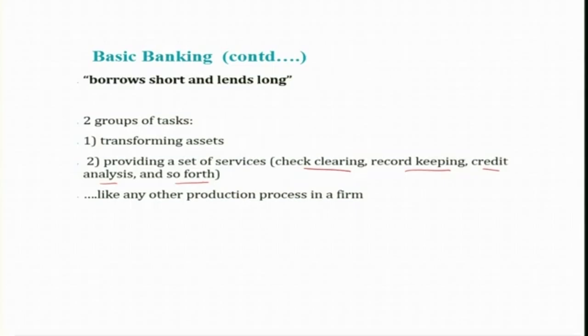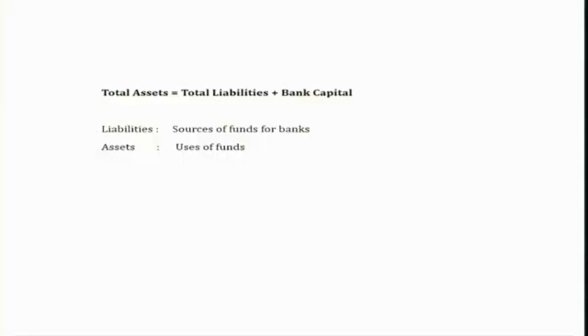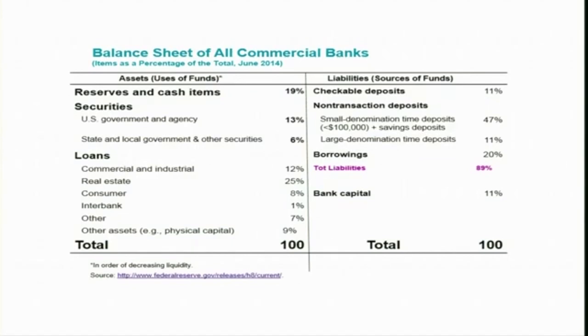However, we need to remember that unlike other firms, a bank is considerably different from how other firms work. We will cover that in today's session and the subsequent session. Now, in order to understand what a bank does, we will go through the balance sheet of a bank. In the balance sheet, we normally use the terms liabilities and assets. When it comes to a bank, the total assets equal total liabilities plus bank capital.